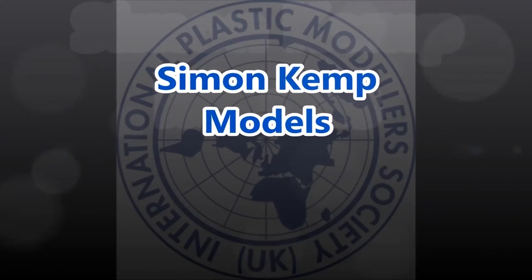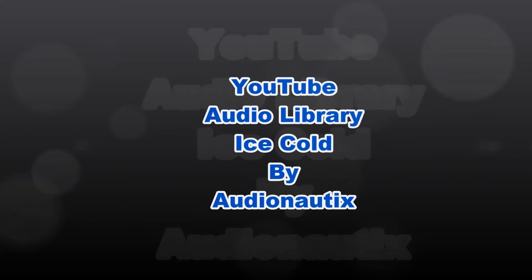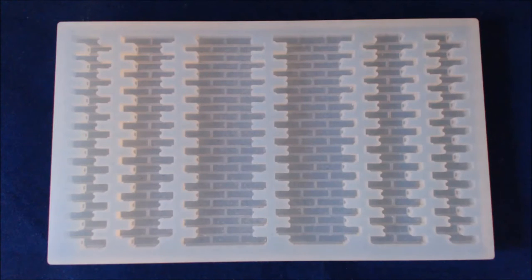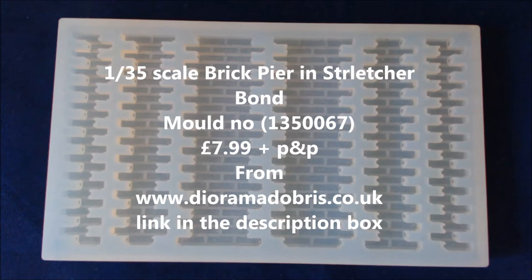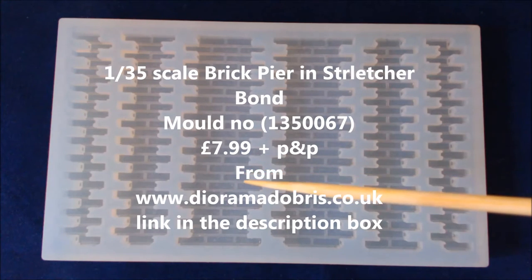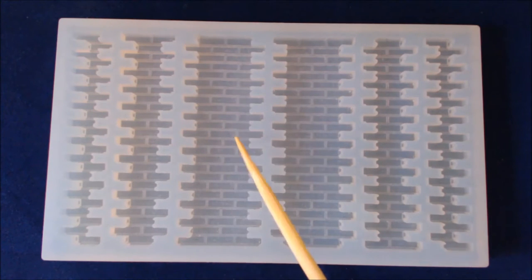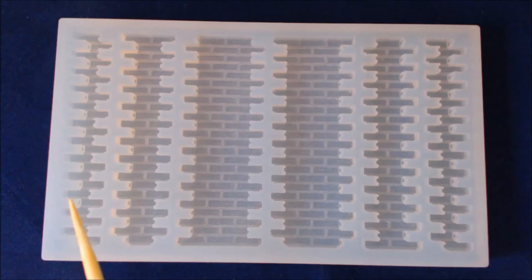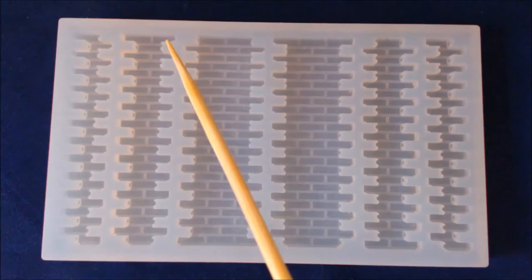Shall we begin? We're going to take a look at two molds. The first mold is the one you're looking at now. This is a brick pier. It comes in stretcher bond as you can see, and this will cast three size piers.